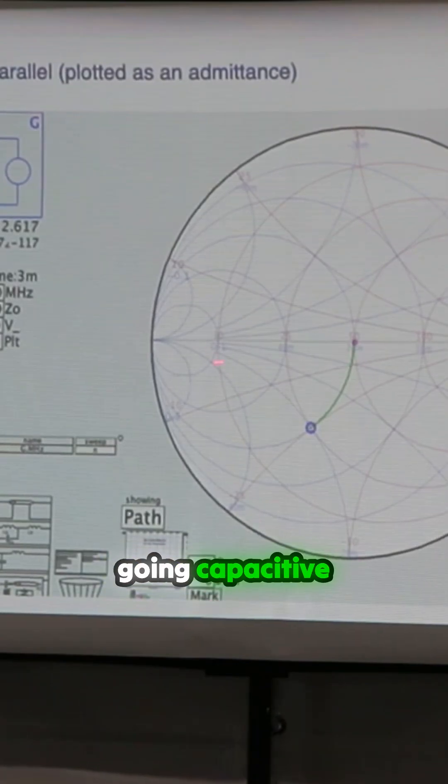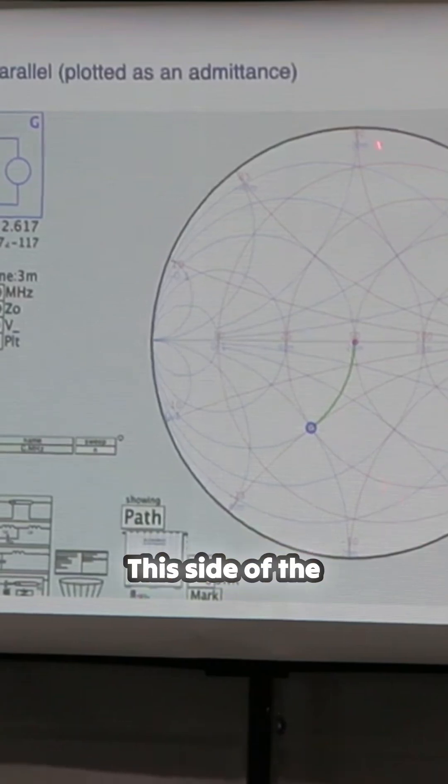Remember we're going capacitive because this side of the Smith chart is capacitance. This side of the Smith chart is inductance, right?